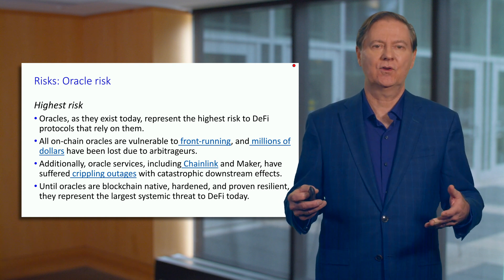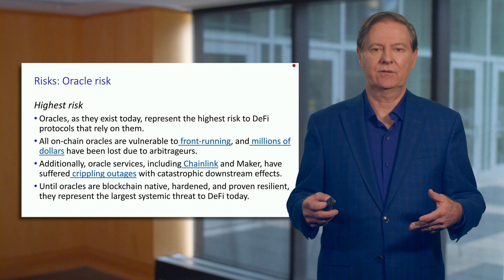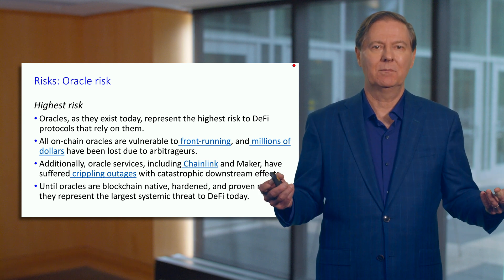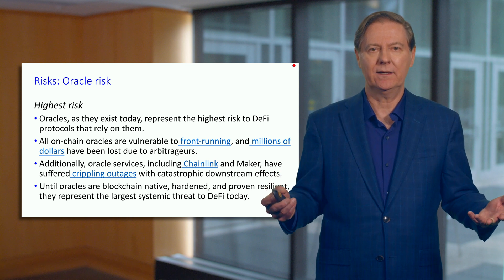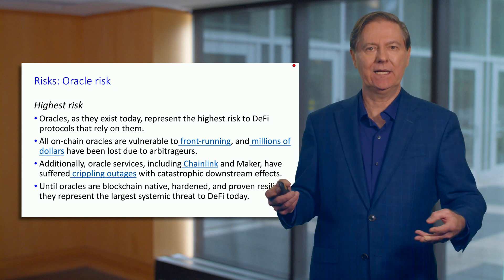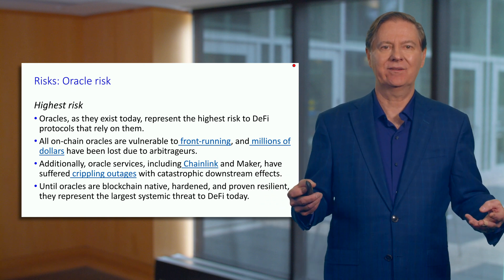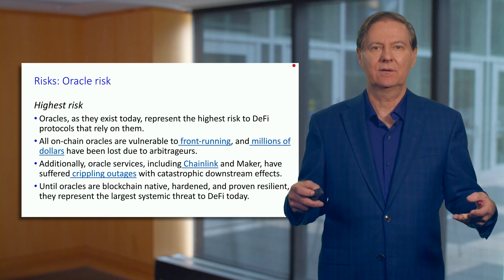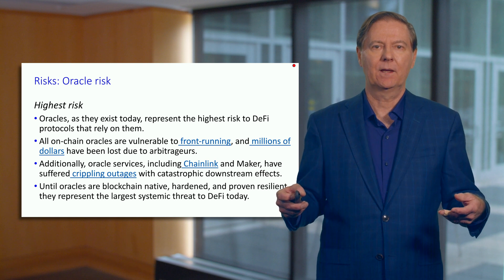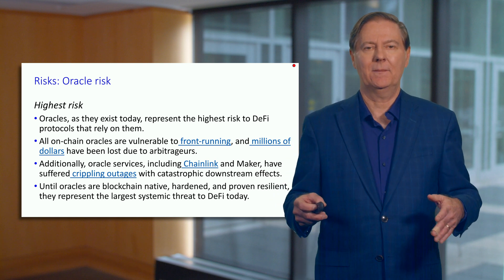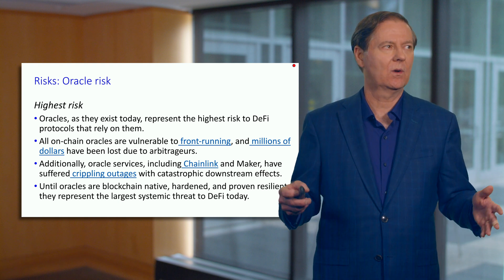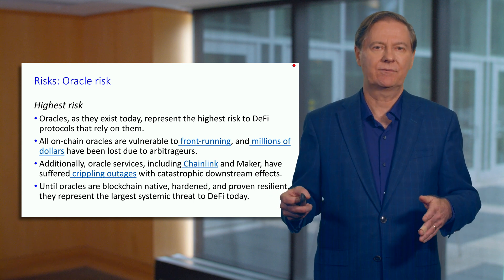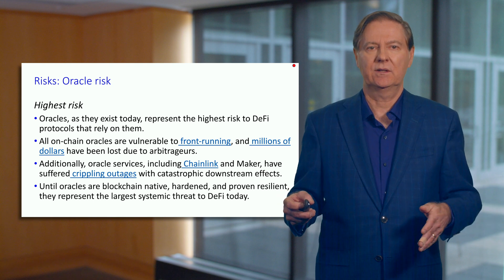We've had situations where there have been outages in Chainlink and Maker. When there's no oracle, the DeFi protocol basically stops working. You can't do anything. You go out for the data that you need and the data doesn't exist, so the transaction just stops or reverts to the original state. This is an ongoing issue. There could be a whole course on oracles — how to construct them, the different types, and the different risks. But oracle risk is definitely a top-three risk in DeFi.